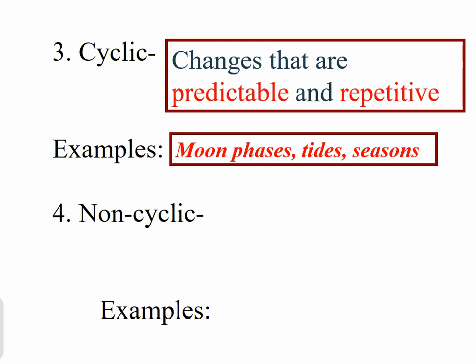Moon phases are another example — we go through a series of moon phases from the new moon to the quarter moons to the full moon every month because of the revolution of the moon. We also have seasons on planet Earth as the Earth revolves around the sun, going from summer, fall, winter, and spring. There are lots of examples of cyclic relationships in Earth science.